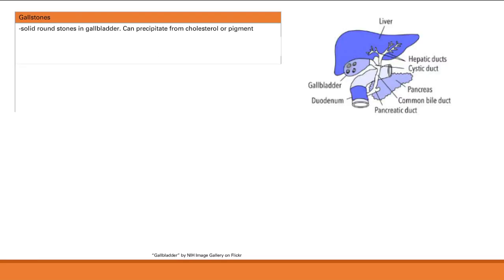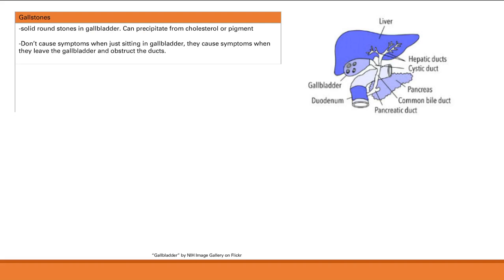Next we talk about gallstones — solid round stones in the gallbladder. They can precipitate from cholesterol or pigment. They don't cause symptoms when sitting in the gallbladder; you only get symptoms when gallstones leave the gallbladder and go into the ducts, potentially causing obstruction.